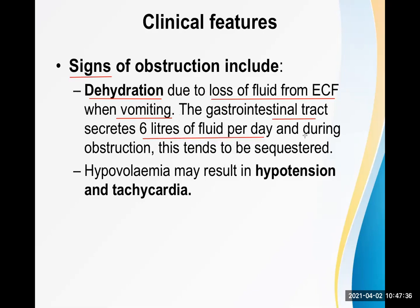At the same time, the GI tract secretes six liters of fluid per day, and during obstruction this fluid tends to be sequestered inside the lumen — it accumulates and cannot be absorbed. This is known as third-space loss. Although the fluid appears to still be inside the body, it has left the circulatory system and is sitting in the lumen of the bowel, so the body becomes dehydrated.